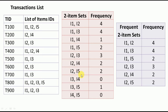Once we write the frequencies, we need to identify the frequent two-item sets — those that satisfy the minimum support of 2. Some combinations like I1-I4, I3-I4, I3-I5, and I4-I5 do not satisfy the minimum support. Hence they are not called frequent two-item sets. We write only those item sets which satisfy the minimum support, along with their associated frequencies.